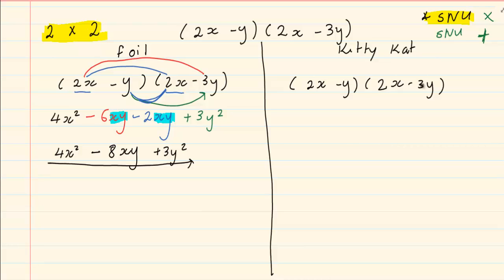Now it is very similar to the FOIL. You will see it is the same thing. It is just looking different. We have got 2 times 2 which is 4x squared.